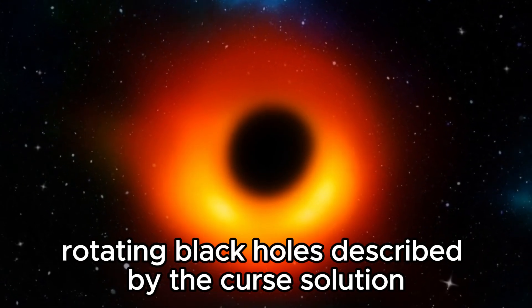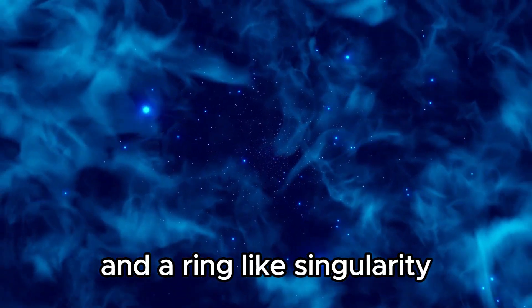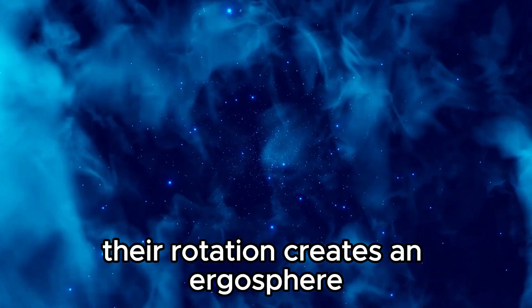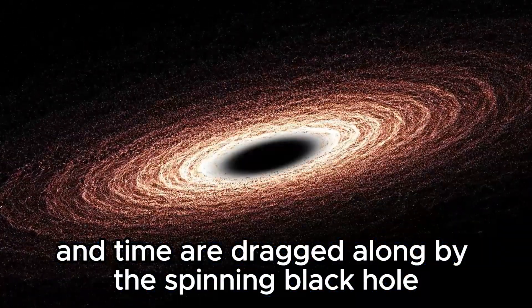Rotating black holes, described by the Kerr solution, have an oblate event horizon and a ring-like singularity. Their rotation creates an ergosphere, a region where space and time are dragged along by the spinning black hole.